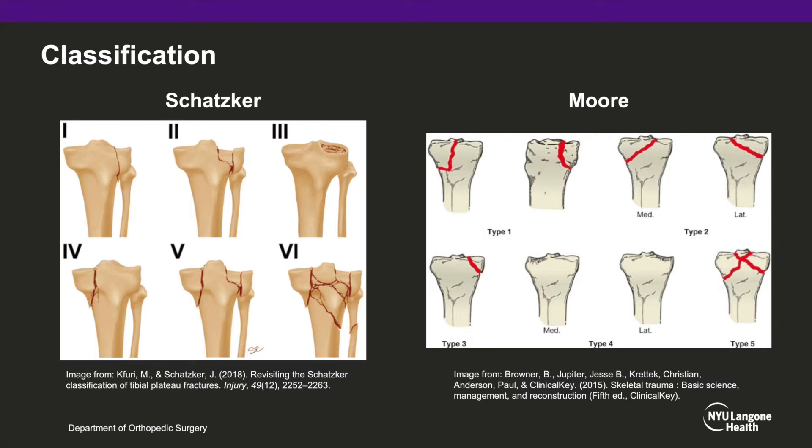A Moore type 1 is a coronal split fracture that can occur in the medial, lateral, or posterior tibial plateau. A Moore type 2 is a fracture of the entire condyle. A Moore type 3 is a rim avulsion fracture. A Moore type 4 is a rim compression fracture. And finally, a Moore type 5 is a four-part fracture.